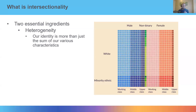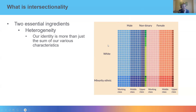There are two essential ingredients to think about when taking an intersectional approach. The first relates to heterogeneity — the idea that our identities are produced by more than just the sum of our characteristics, and those characteristics produce particular inequalities. We can imagine dividing up society into three categories of gender, two categories of ethnicity, and three categories of socioeconomic position, which combine to categorize people into a number of different groups or strata.